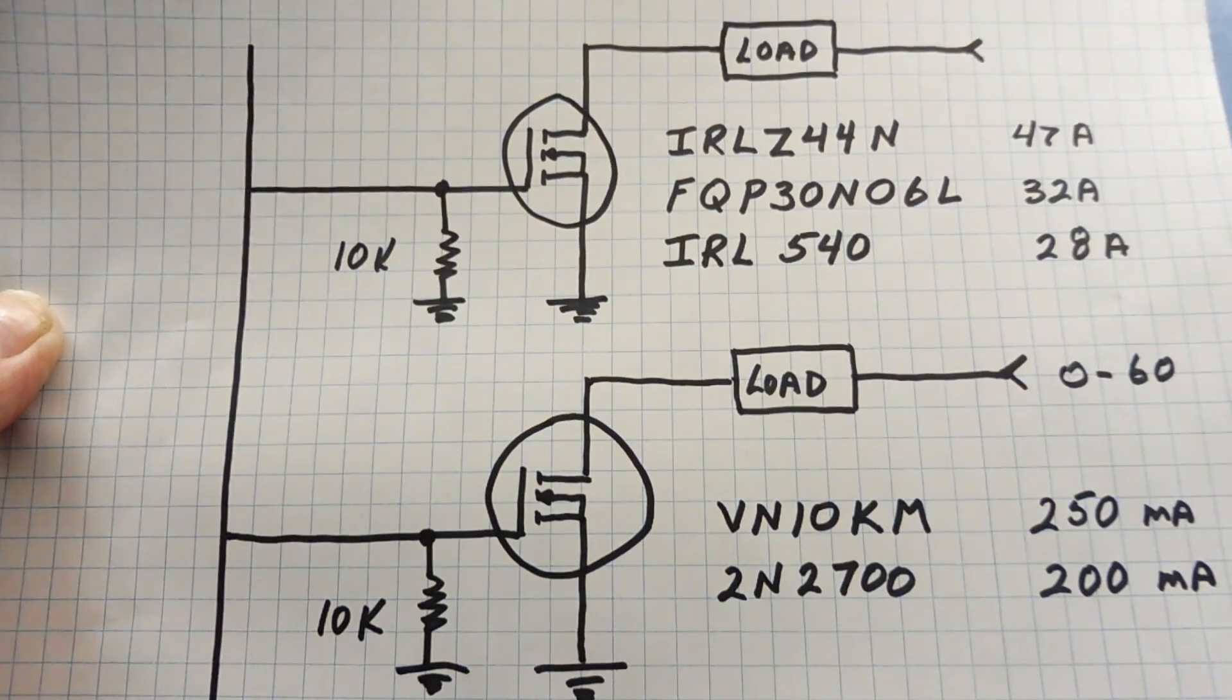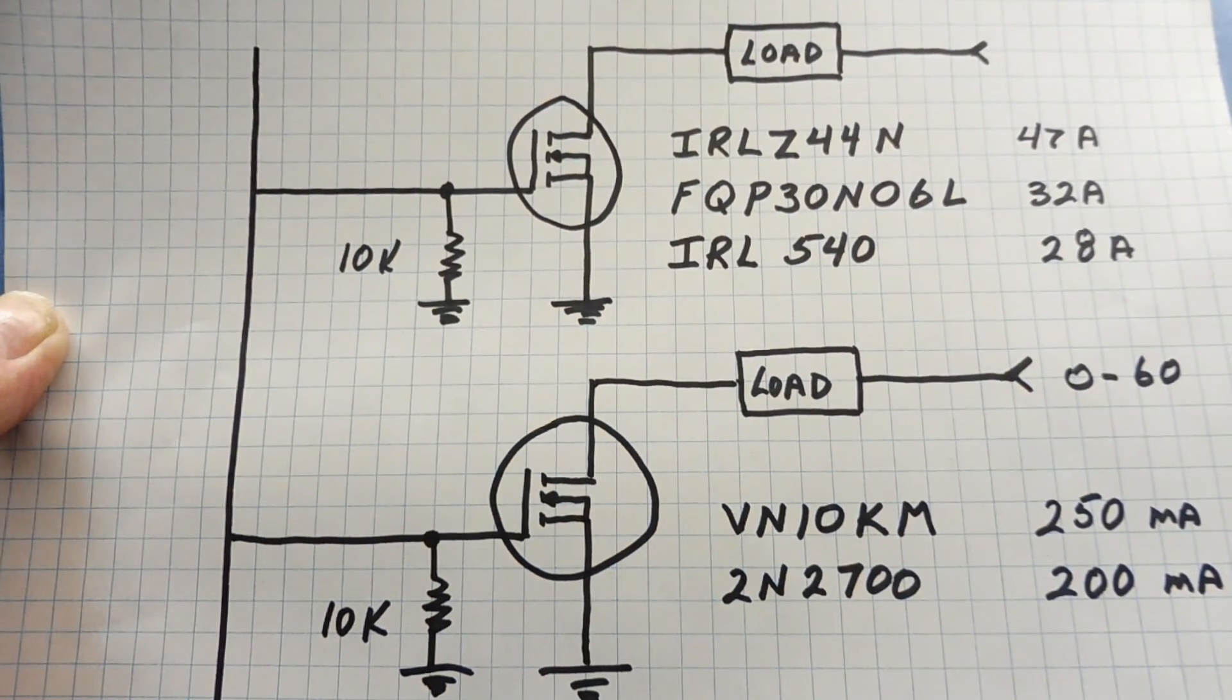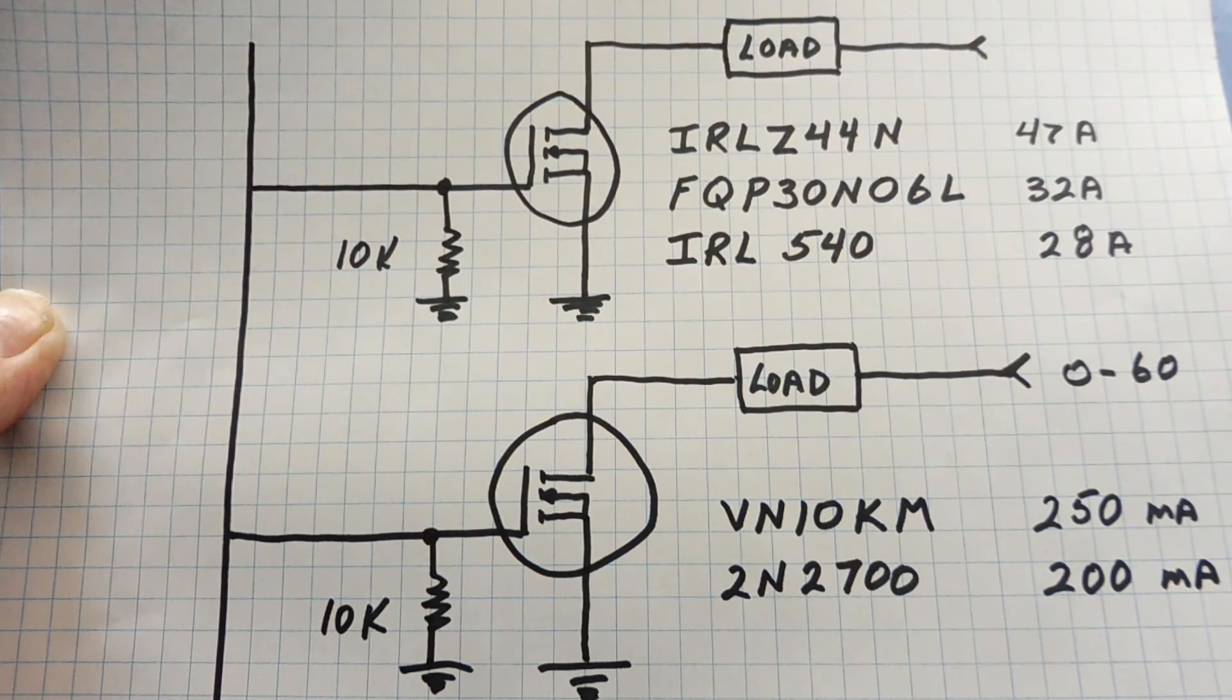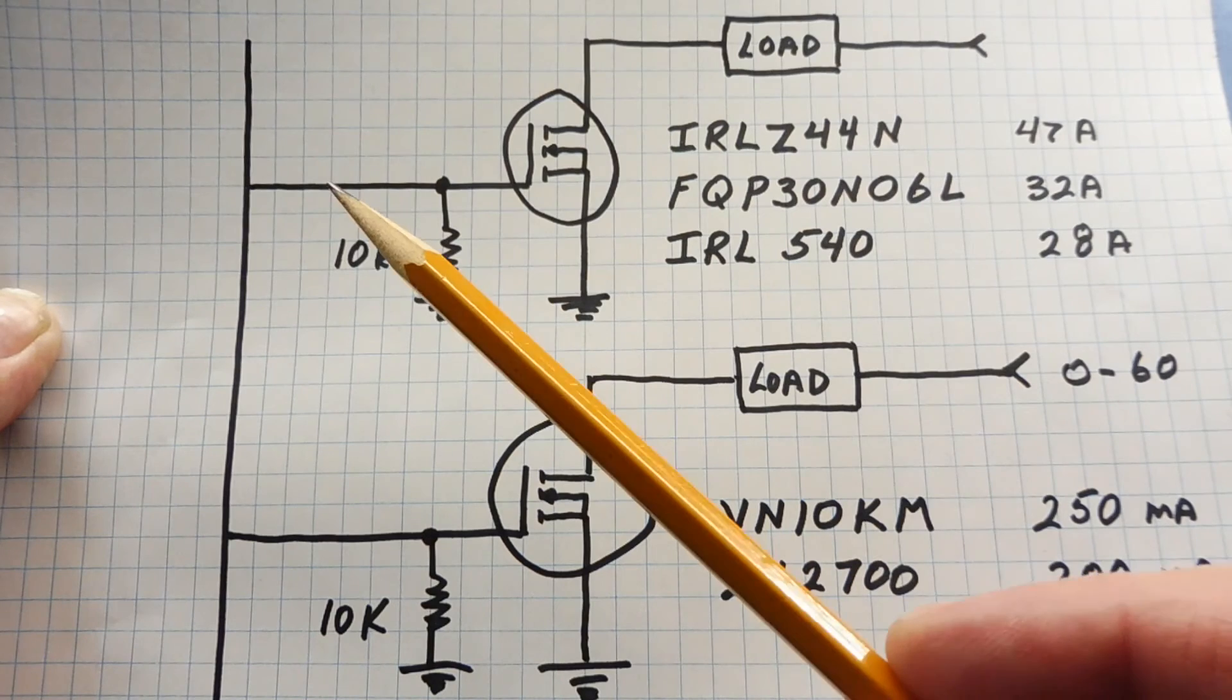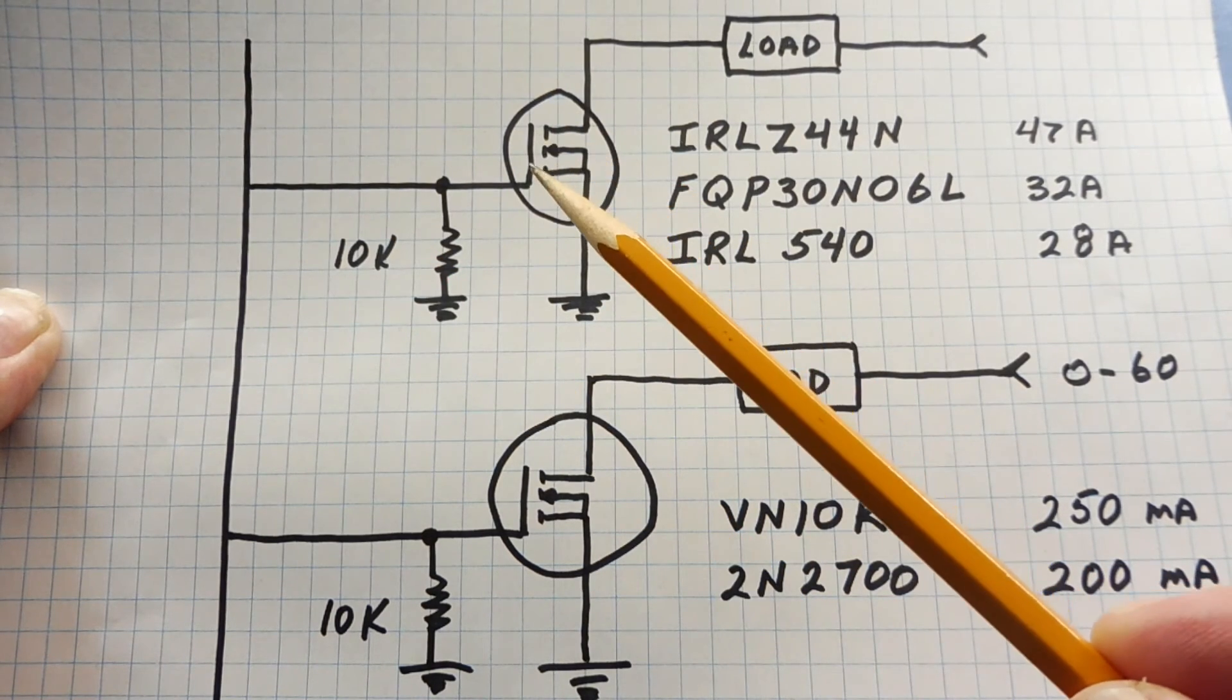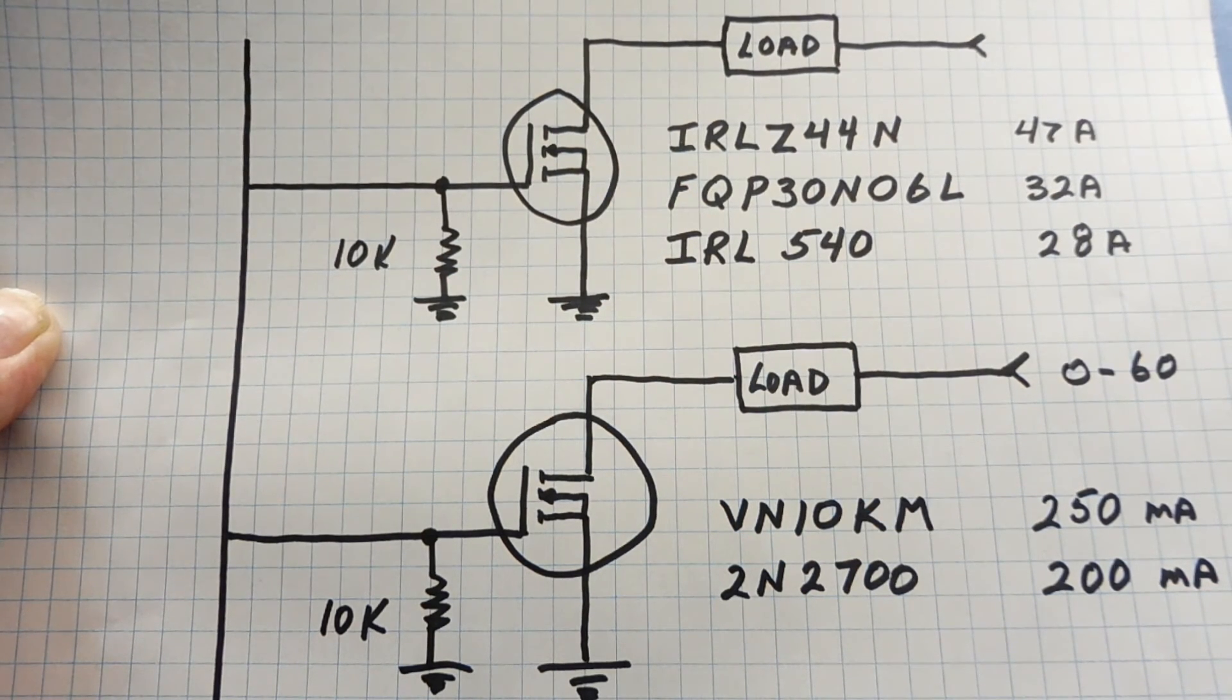Here are the heavy current drivers. These are N-channel MOSFETs, and they all have special properties. They're all logic level inputs, so 5 volts on the gate will drive these MOSFETs. Because not all MOSFETs are logic gate input.